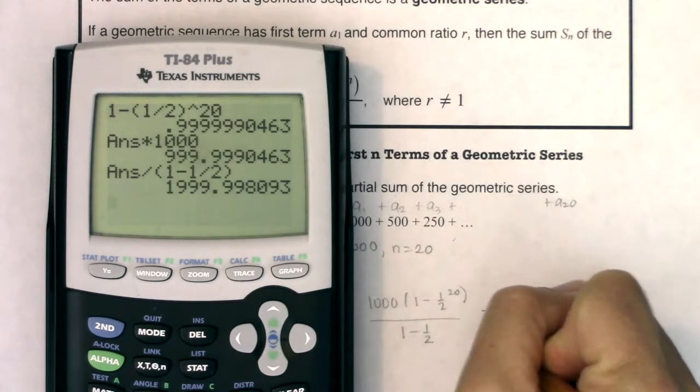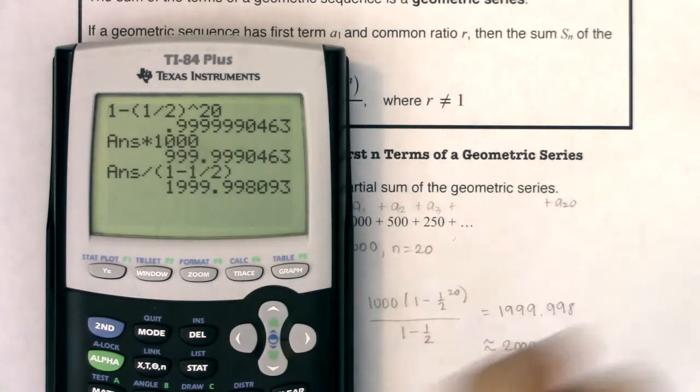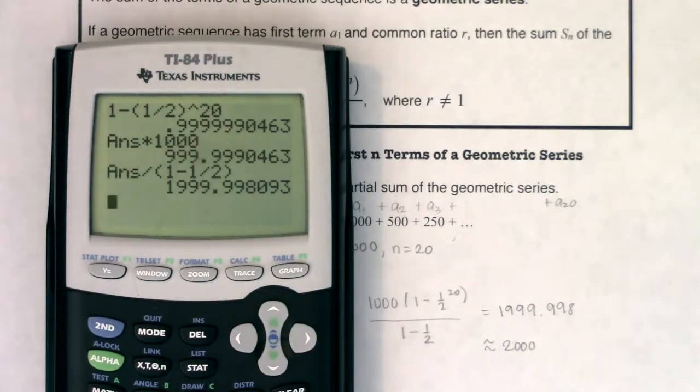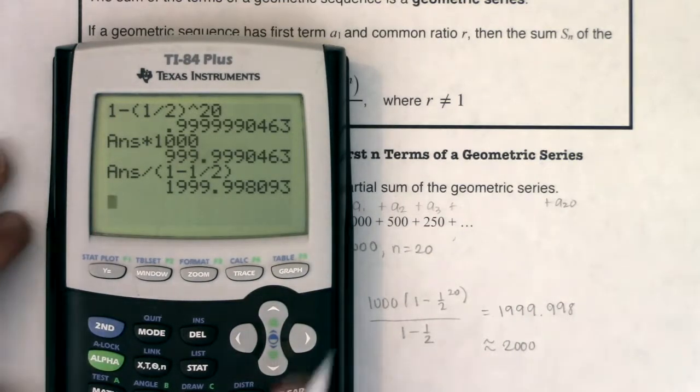And it looks like I'm getting 1999.998. So it's getting pretty close to 2,000. It's not there yet. I'll talk a little bit later how if this was an infinite series, our answer would have been 2,000. But it's not an infinite series. It's finite. We're only adding the first 20 terms.